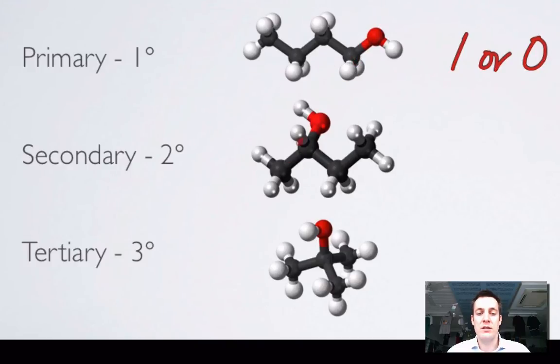This alcohol carbon has got two carbons directly attached to it, so it's called secondary. This one here—the alcohol carbon—has got three carbons directly attached to it, so it's called tertiary. These things are really important because different types of alcohol react in different ways, but we'll come to those reactions later.